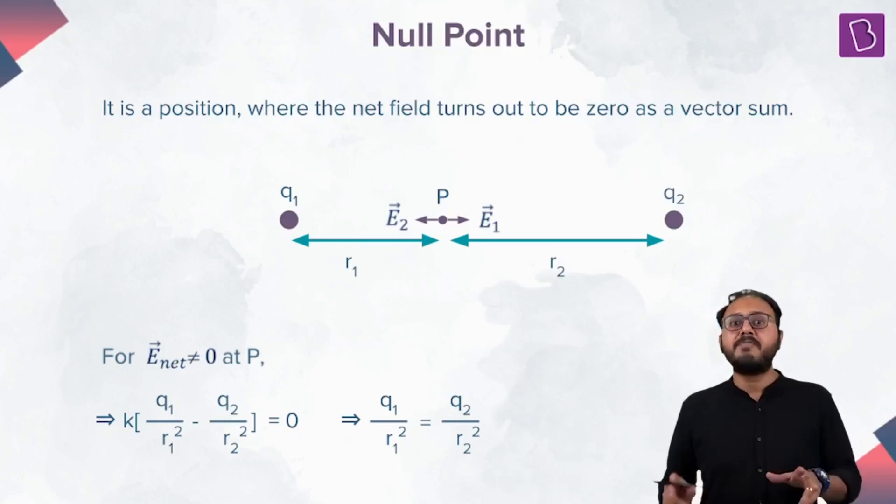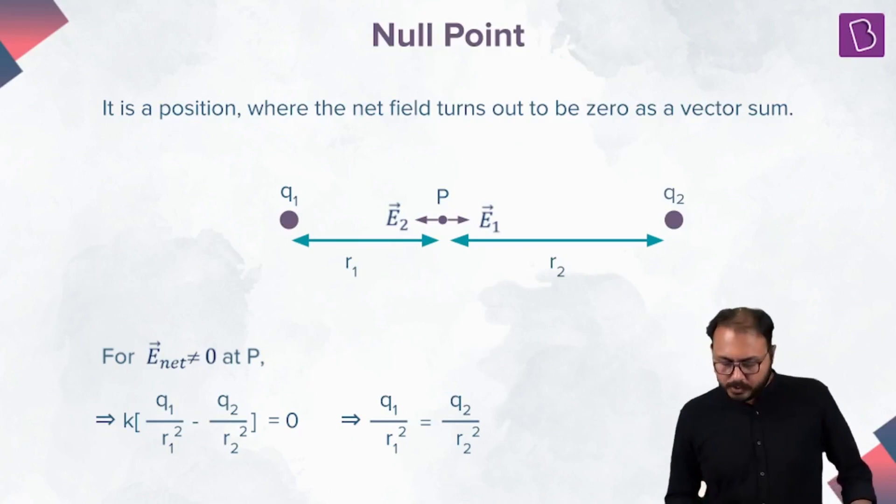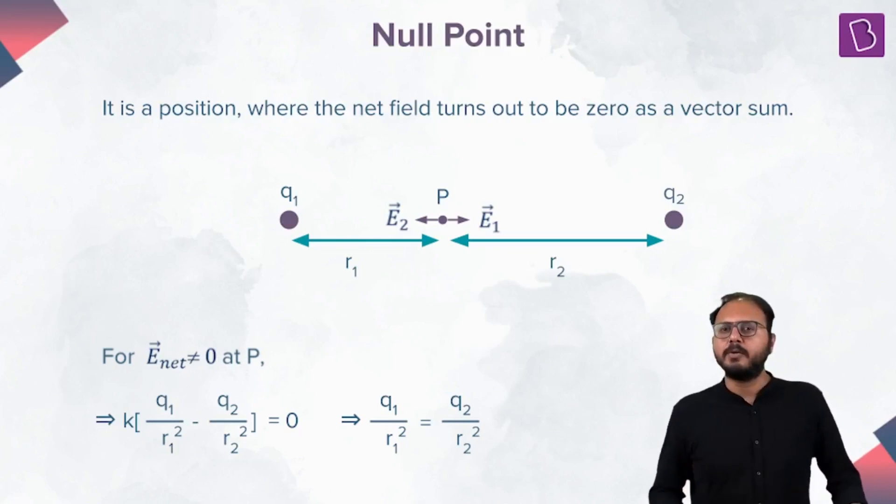In order for them to nullify each other, one job is already done—the directions are opposite. Now for magnitude: if their magnitudes are equal, that means KQ1 by R1 square equals KQ2 by R2 square, or Q1 by R1 square equals Q2 by R2 square.